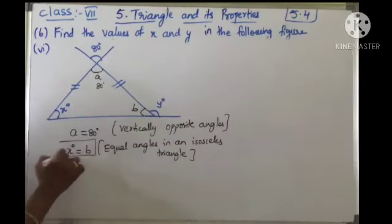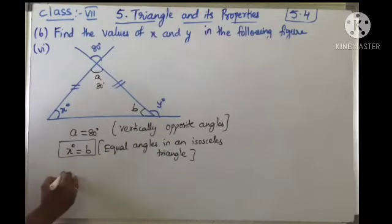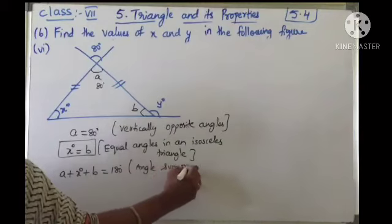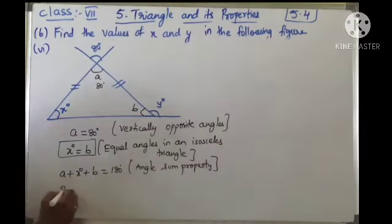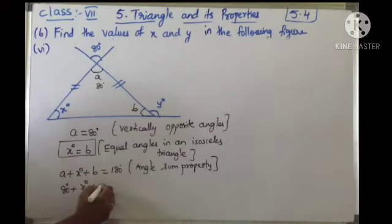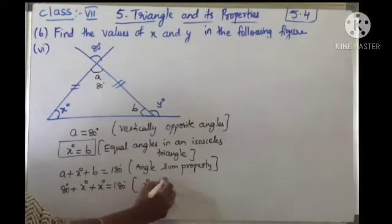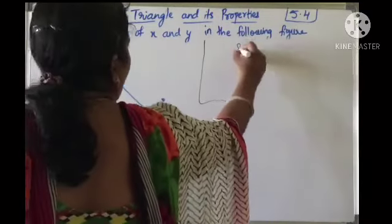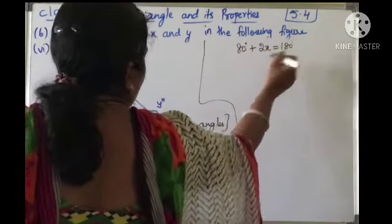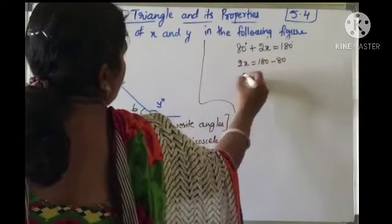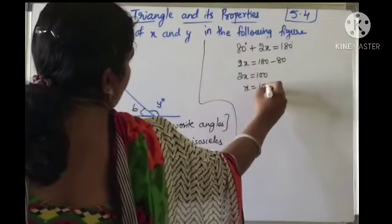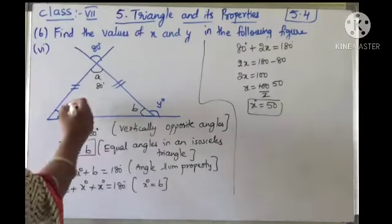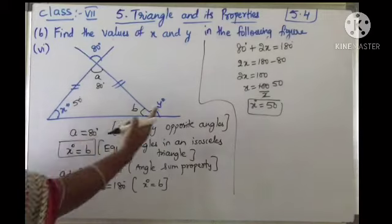Now using the angle sum property: a plus x plus b equals 180. In place of a write 80, and since x equals b, write x for both. So 80 plus 2x equals 180. 2x equals 100, so x equals 50 degrees.